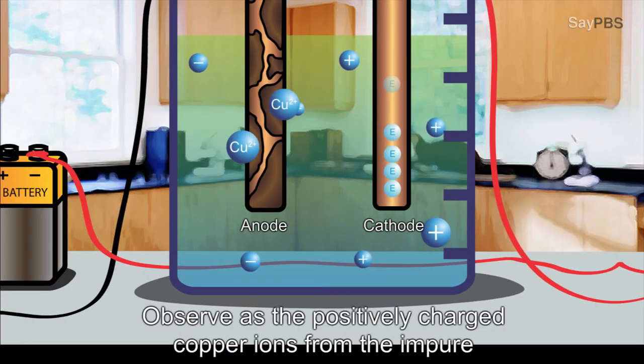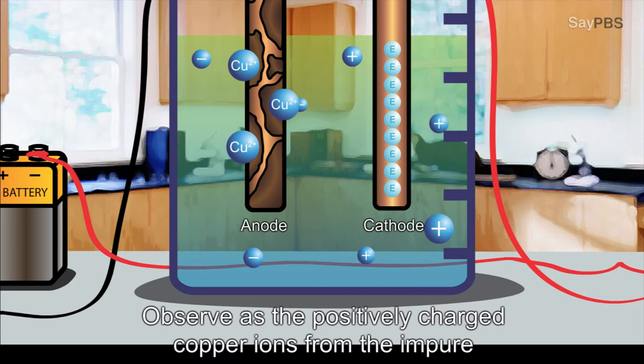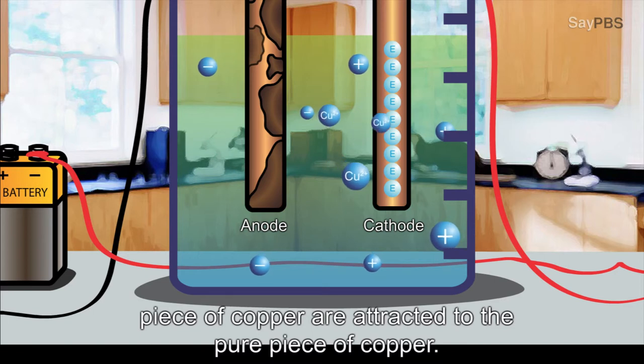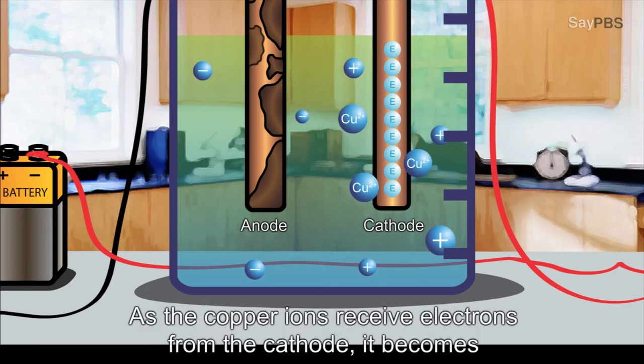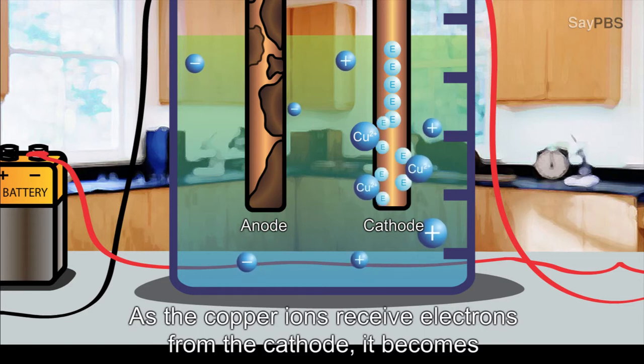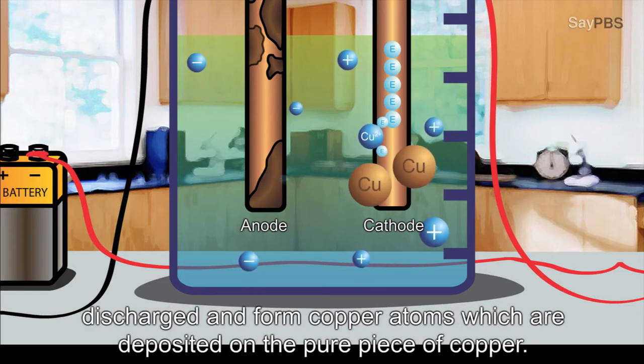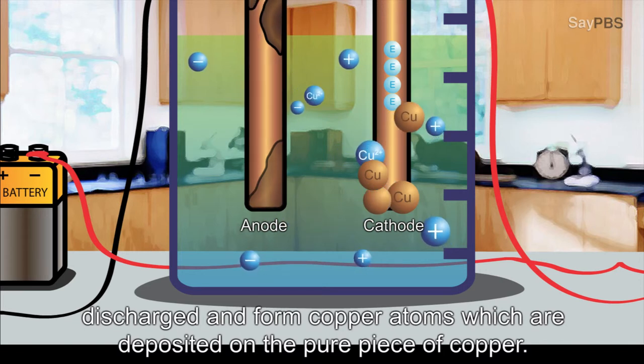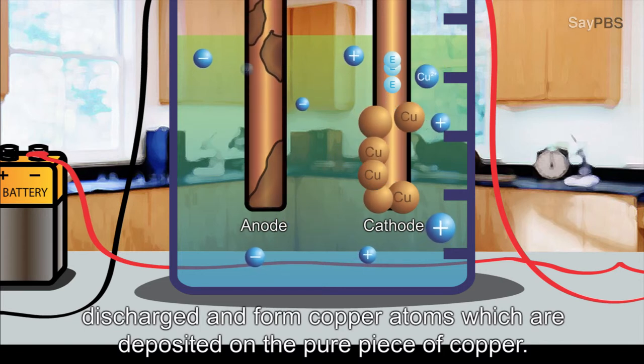Observe as the positively charged copper ions from the impure piece of copper are attracted to the pure piece of copper. As the copper ions receive electrons from the cathode, it becomes discharged and form copper atoms which are deposited on the pure piece of copper.